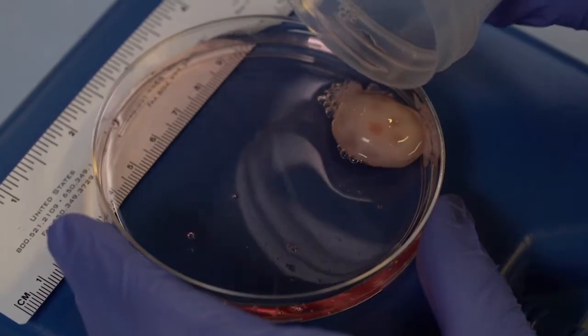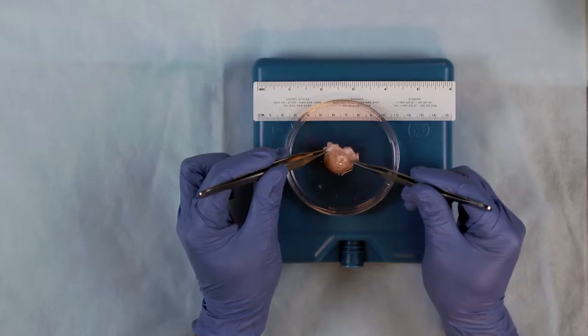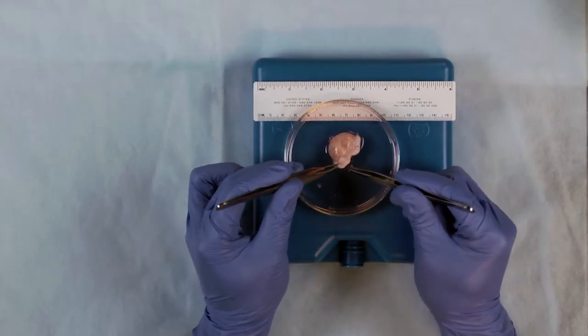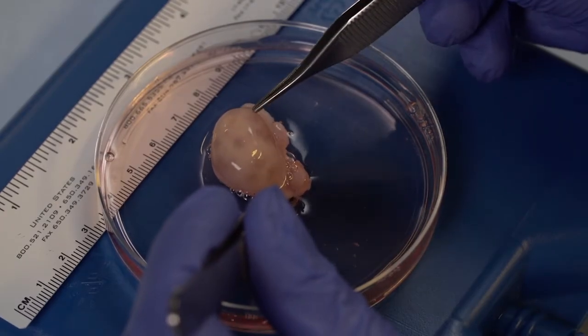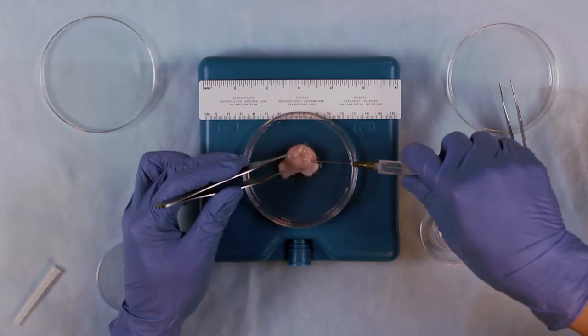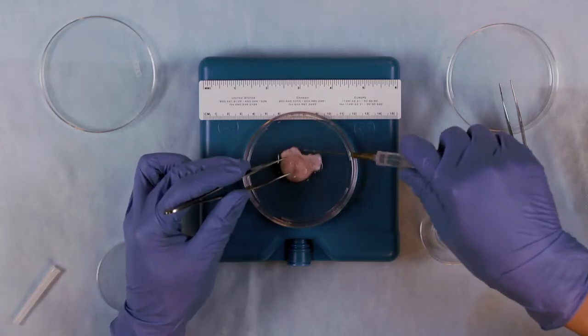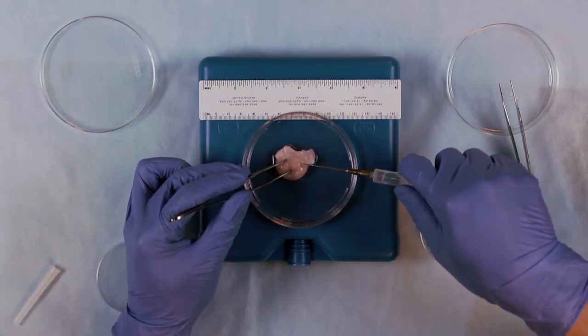Tip the ovary out into a 100-millimeter petri dish. Examine the ovaries to check if there are any antral follicles on the surface. Aspirate those follicles using a 3cc syringe with an 18-gauge needle.